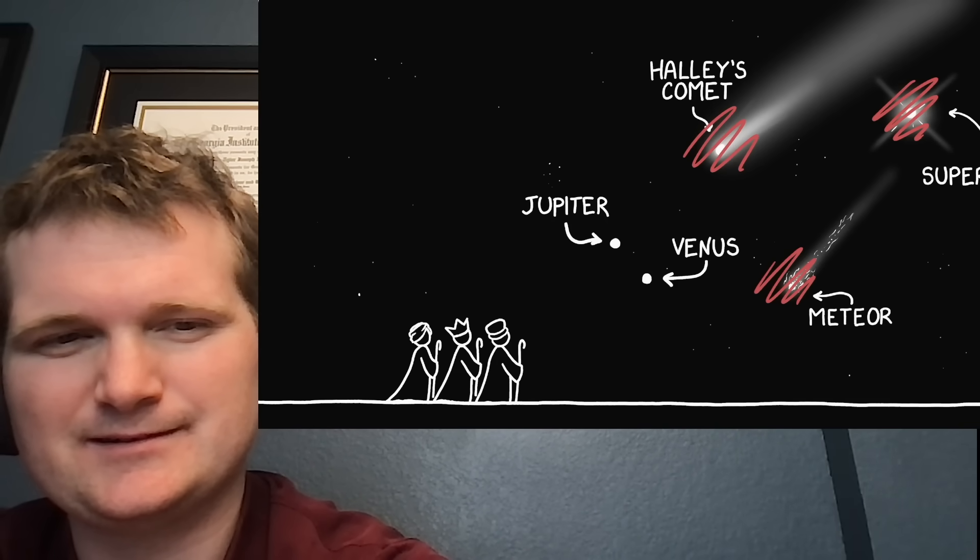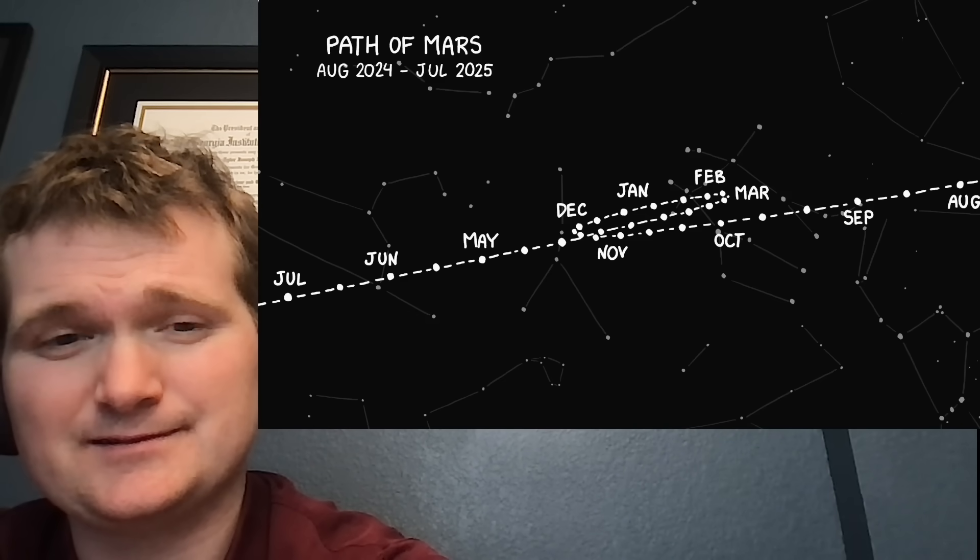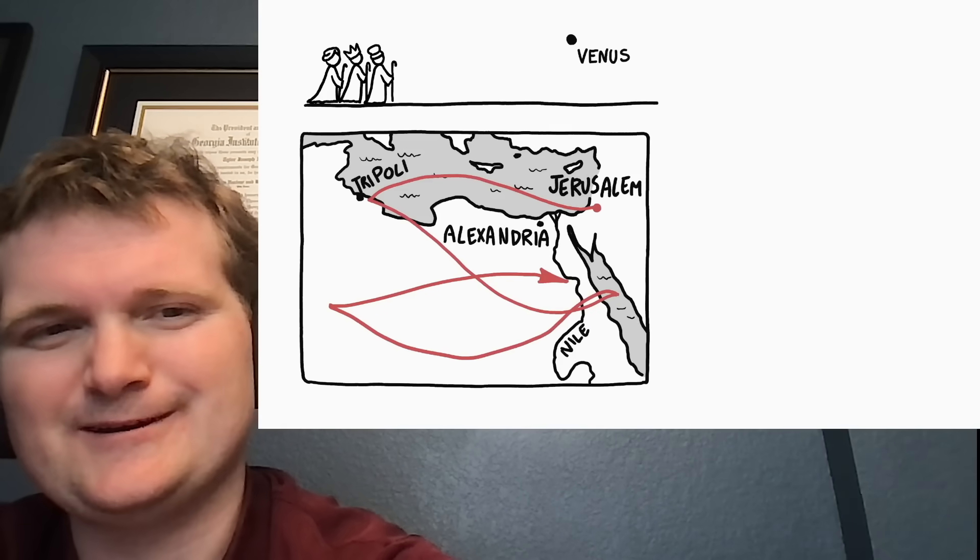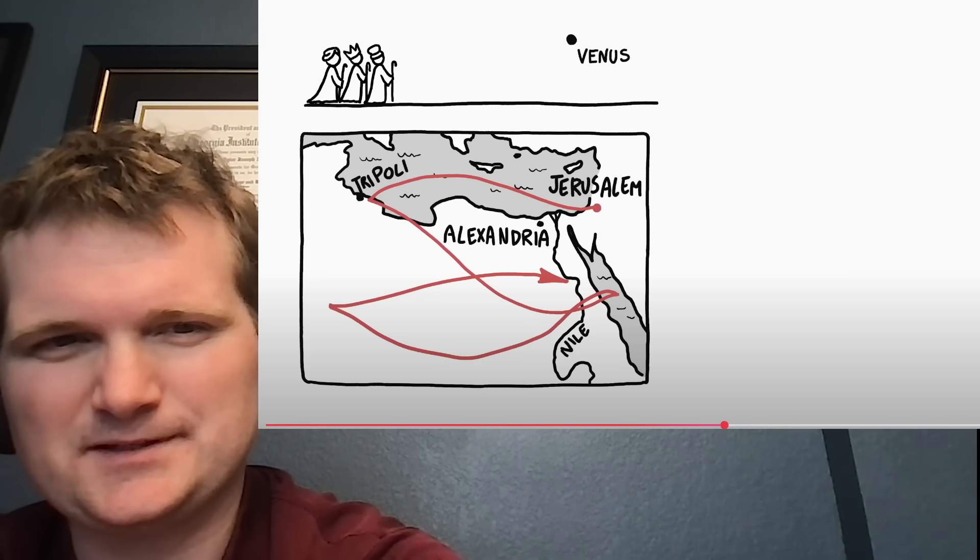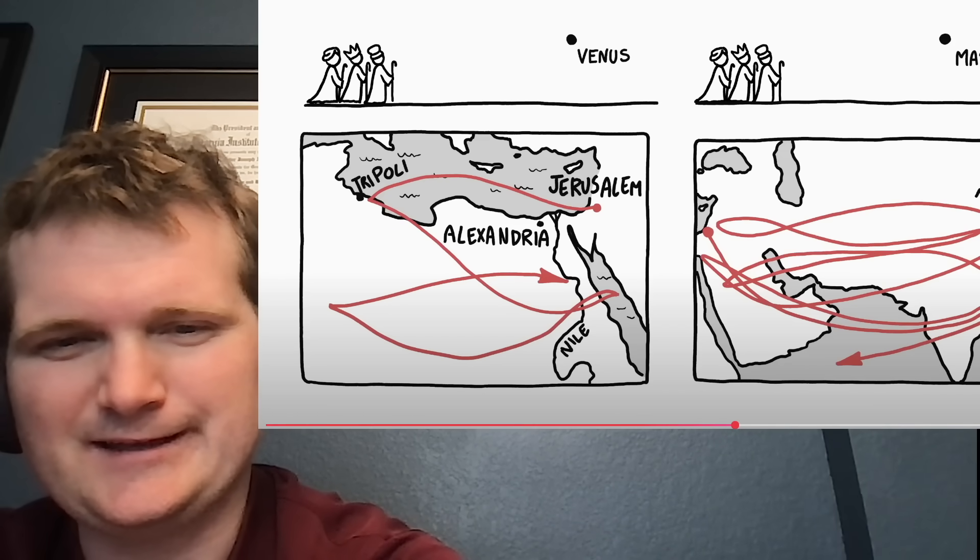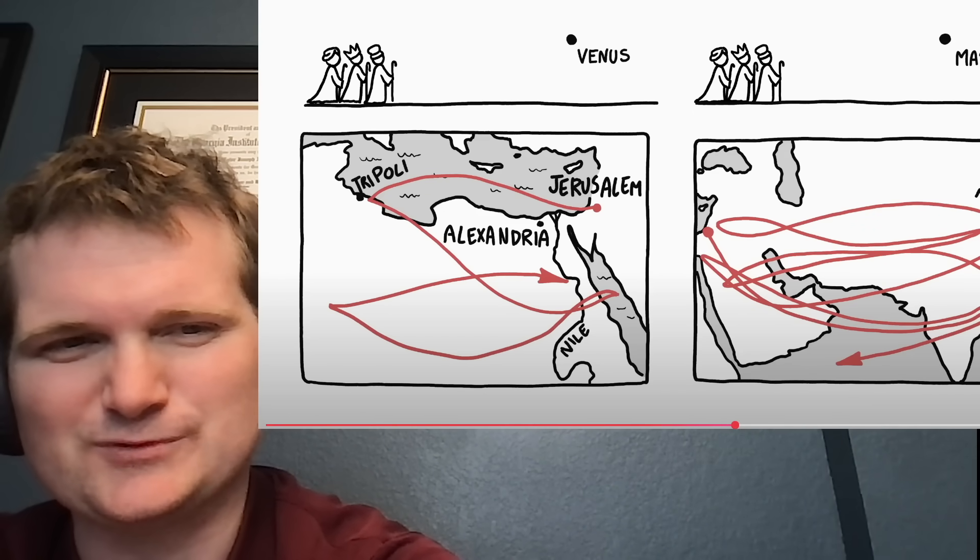What if the wise men followed a planet? Planets move against the background of stars, so the paths they produce are more complex. Here's where the wise men would have gone if they followed Venus. I like that they mapped that out. That's really cool. And here's their path for Mars. Yeah, a bit squirrely and also really far.